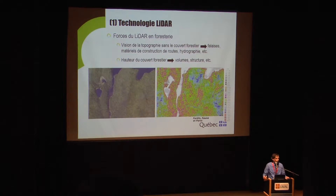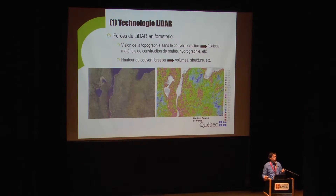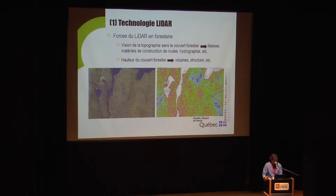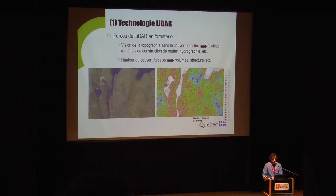Another element is the height of the forest cover. With our experts in interpretation, we can bring out different elements. This data is easy to work with. We have easy-to-understand symbols here in blue and red — you see white pines, stands of about 30 meters. Associated to these heights, we can build models and figure out the volumes in cubic meters and get different information.